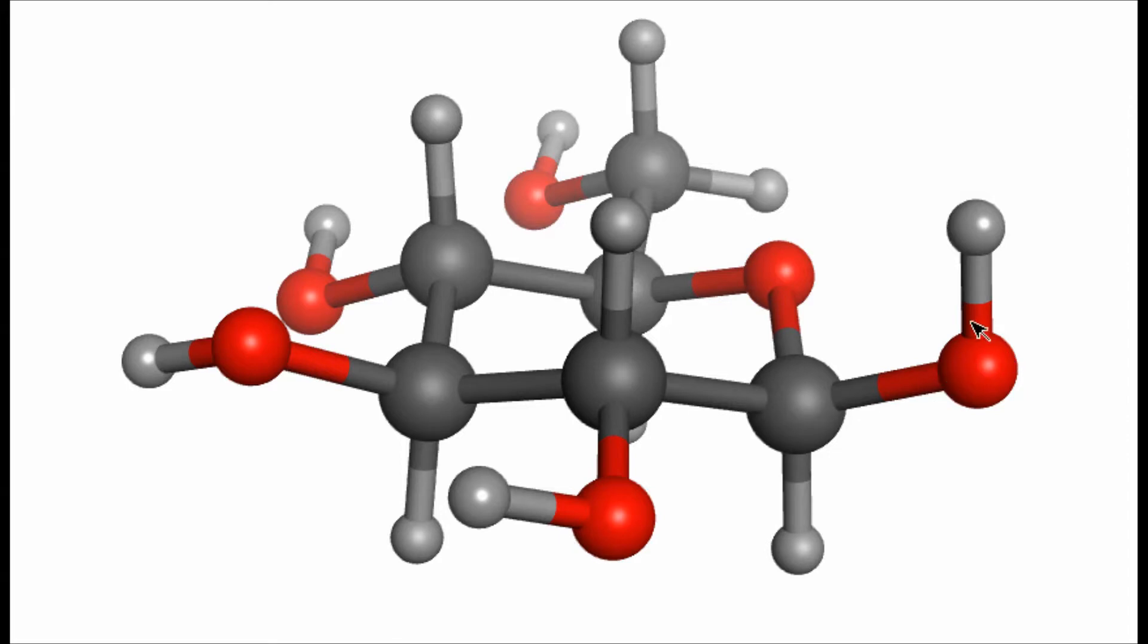The OH group at the anomeric carbon, being shown here, is in the equatorial position. This is known as the beta position, and the result of this locking is that the hydrogen is pointing down from the plane of the ring.